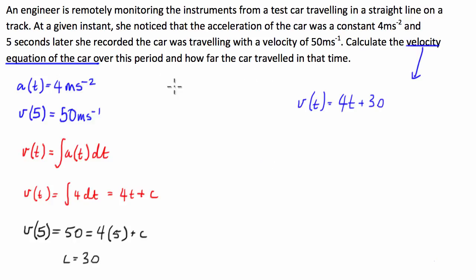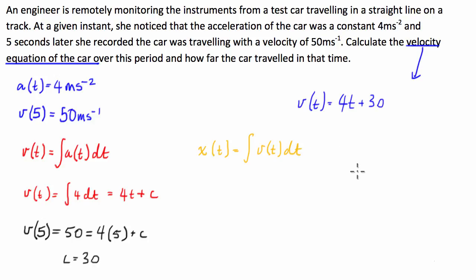We also have to work out how far the car has travelled in that time. We're going to use another piece of calculus which links displacement and velocity, so we say that the displacement in terms of time is equal to the integral of the velocity function with respect to time. Because we are looking for how far the car has travelled, the time we are looking for is equal to 5.